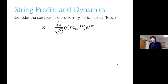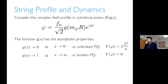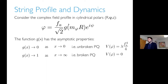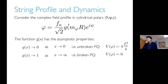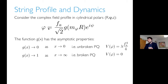To investigate the string profile, we consider a complex field profile in cylindrical coordinates and work out the asymptotic properties. The field has to go to zero when the radial coordinate goes to zero — when the Peccei-Quinn symmetry is unbroken. And when the radial argument goes to one, the symmetry is broken and the potential goes to zero.